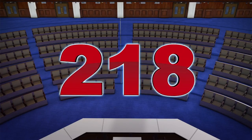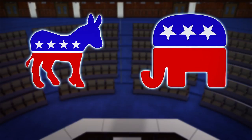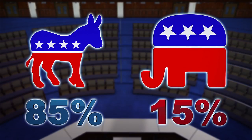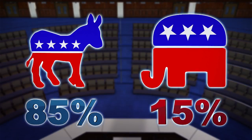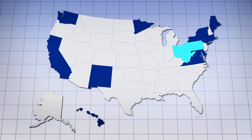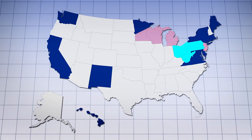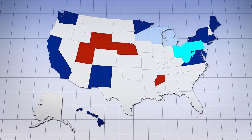The Democrats will need to win 218 seats during the midterm elections to regain control over the House and initiate impeachment proceedings. Polls indicate that they have a good chance of doing so. However, the Democrats are much less likely to win enough seats in the Senate to ensure a two-thirds majority vote for conviction.